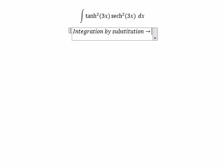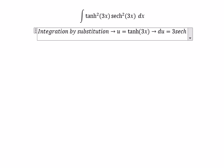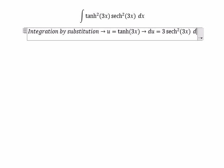So we put u equal to tan of 3x. So you got du equal to 3 sec of 3x squared dx.